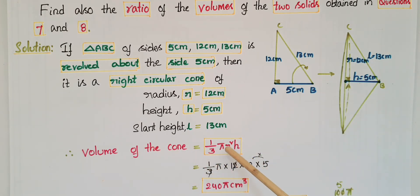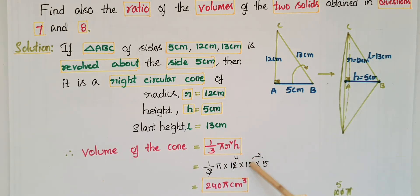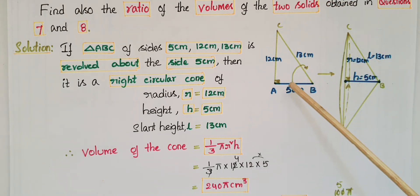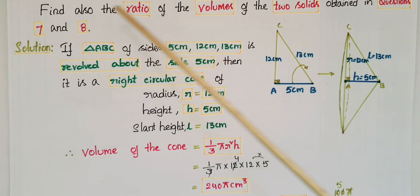Now we have to find the volume of the solid so formed. Volume of the right circular cone equals one-third π r² h, that is one-third π into 12 into 12 into 5. Simplifying: 3 fours are 12, 12 fives are 60, 60 into 4 is 240. So the volume is 240π centimeter cube.